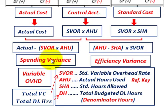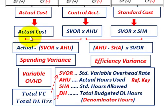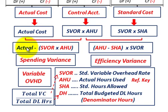The standard variable overhead rate is your total estimated variable cost for the period divided by total estimated direct labor hours. For the spending variance, it's the difference between your actual cost and your variable overhead control account. The control account is SVOR times AHU. You subtract that from your actual cost, and the difference gives you the spending variance.